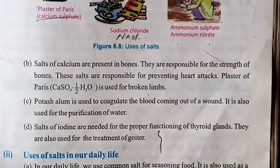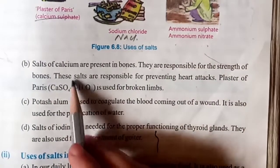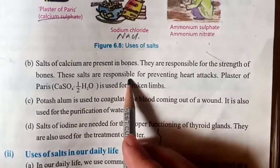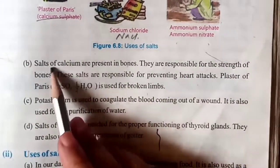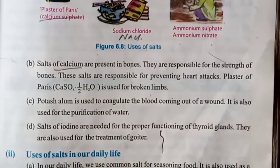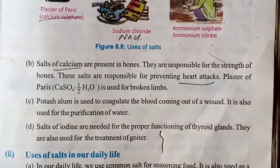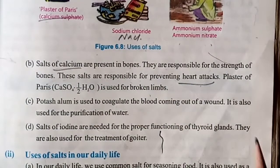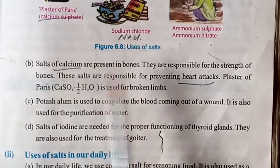Calcium salt plays an important role. If calcium salt levels are higher, your bones will be stronger; if calcium salt levels are lower, your bones will be weak. These salts are also responsible for preventing heart attack. Calcium is one of the main elements that helps prevent heart attack.